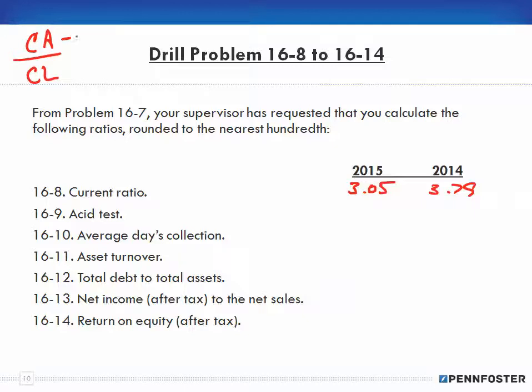Now the acid test ratio — that's a different formula. The acid test ratio is current assets minus inventory minus prepaid expenses, and that's all divided by current liabilities.